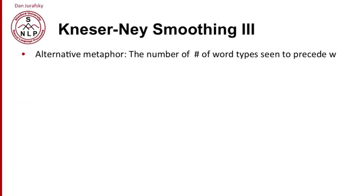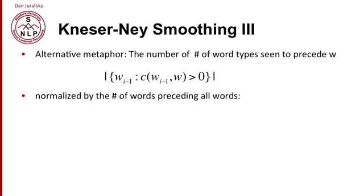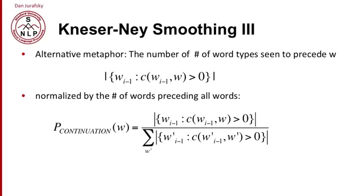Now, it turns out that there's an alternative metaphor for Kneser-Ney with the same equations. So, again, we can see the numerator as the total number of word types that precede w. How many word types can w follow? And we're going to normalize it by the number of words that could precede all words. So the sum over all words of the number of word types that can precede the word. And these two are the same. The number of possible bigram types is the same as the number of word types that can precede all words summed over all words. If you think about that for a second, you'll realize that's true.